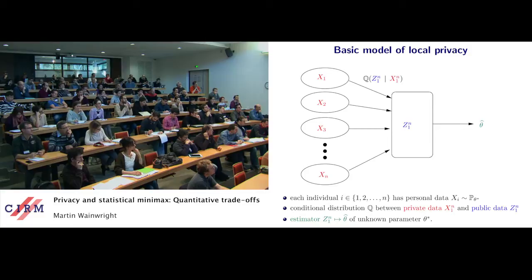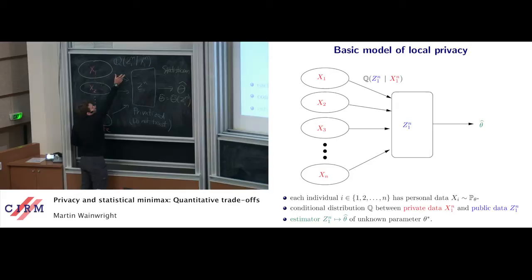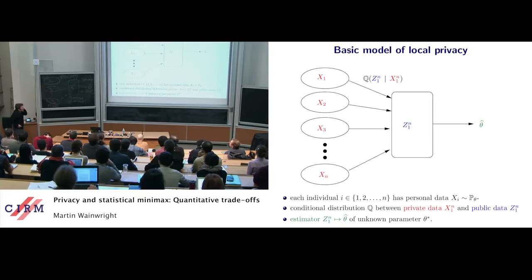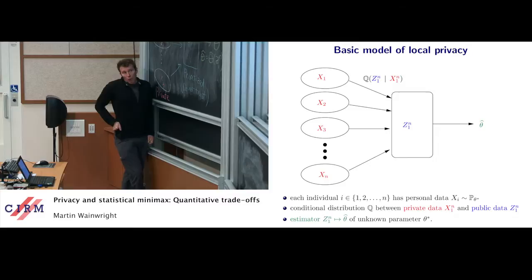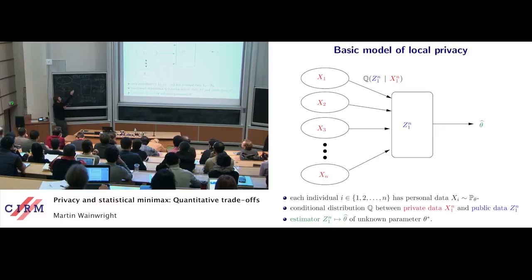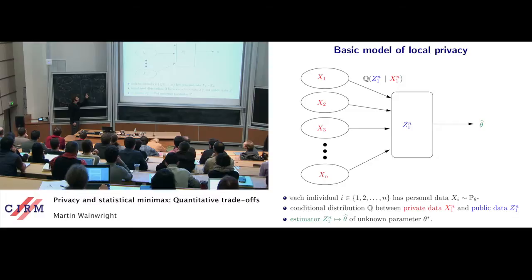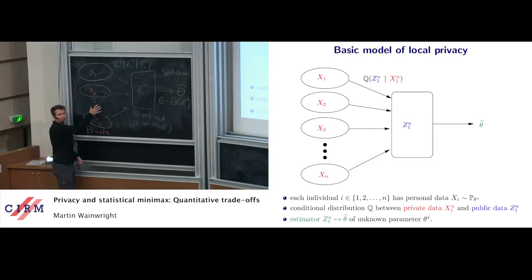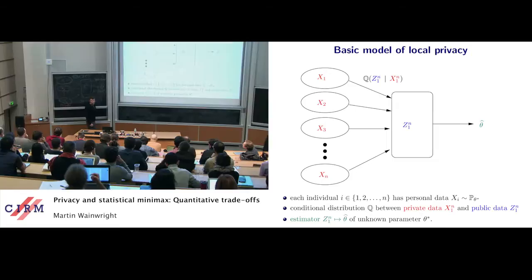So that's our model. The primary piece is this queue Q — often in privacy people call this a mechanism, because it's a way you enforce privacy. What are we interested in? The trade-off: if I choose certain queues, I could choose one that basically erases all the data and gives you nothing — perfect privacy but zero utility. We want interesting trade-offs: things that perturb or noisify the data a little bit, but preserve as much information about a parameter as possible.